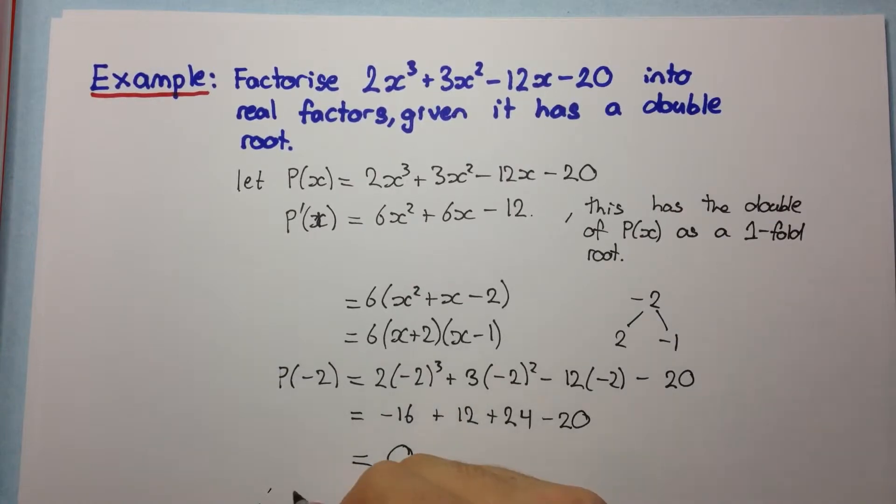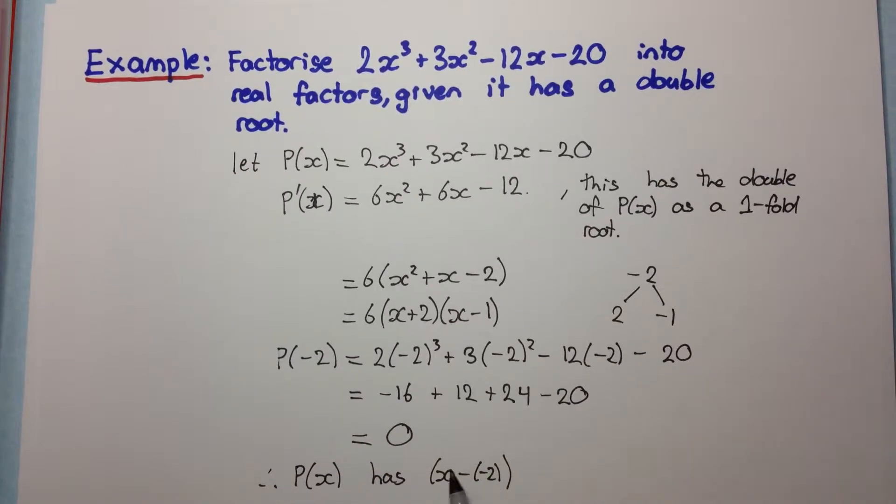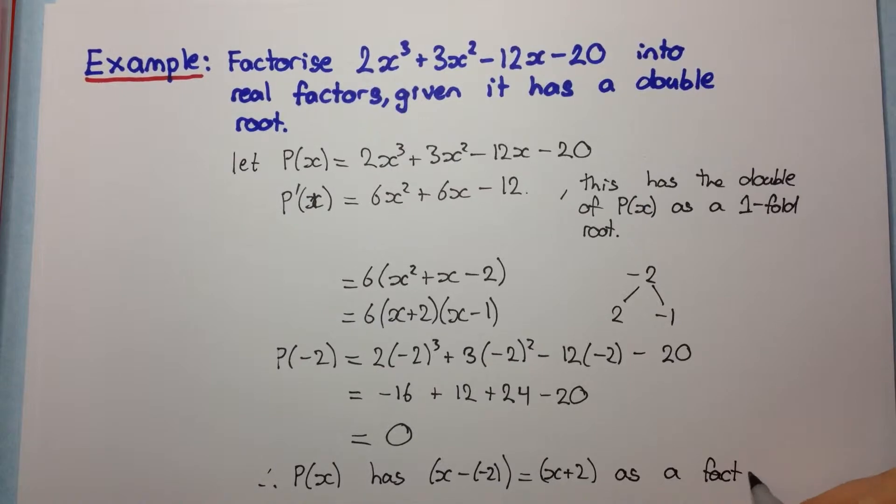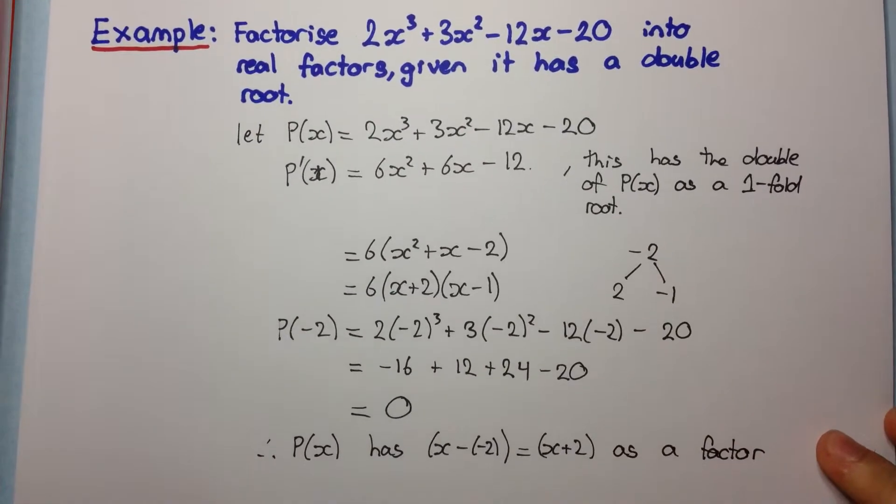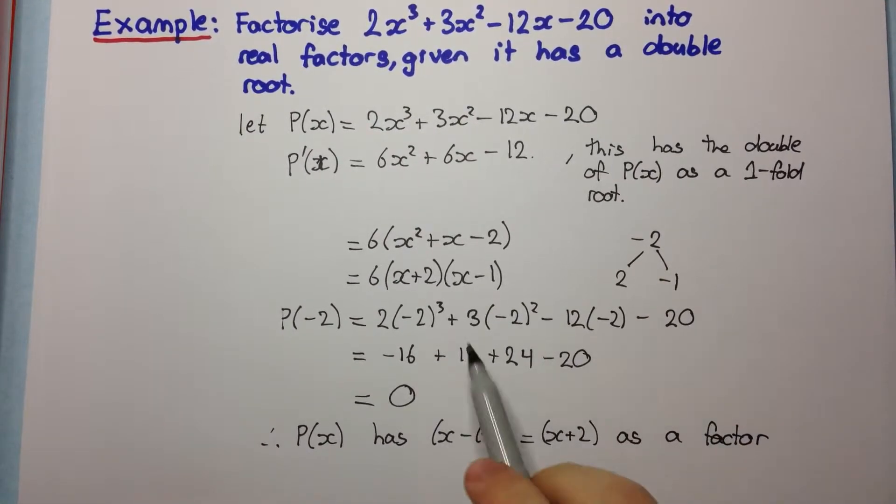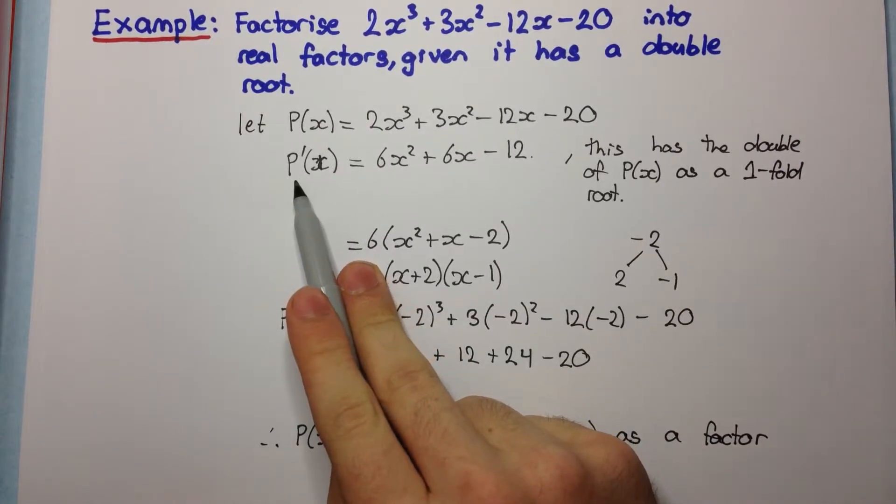So, therefore, P(x) has x minus (-2), which equals x + 2 as a factor. But x + 2 was also a factor of P'(x).